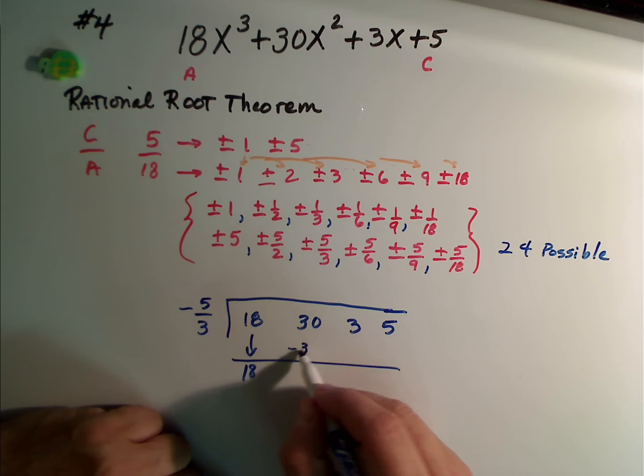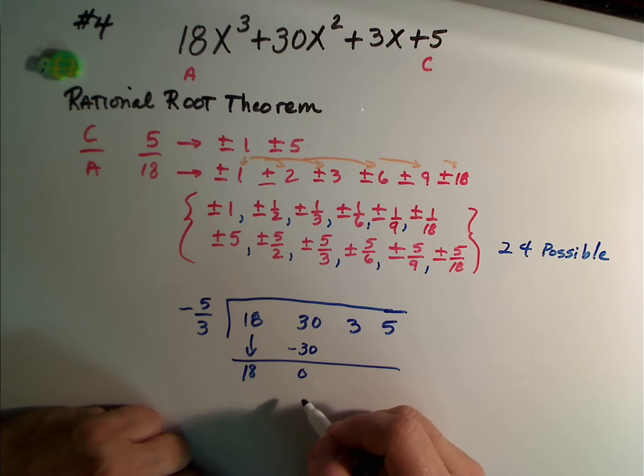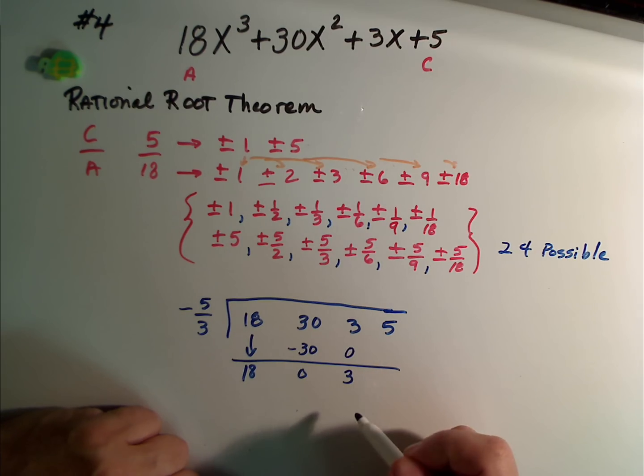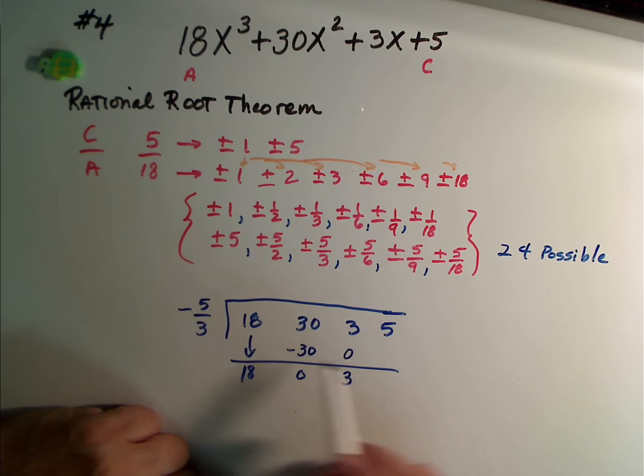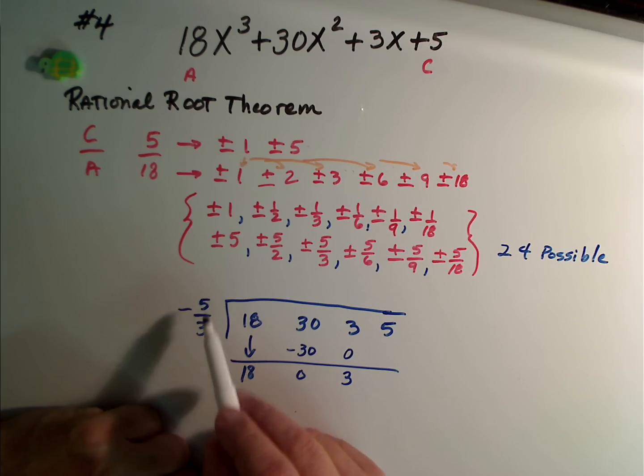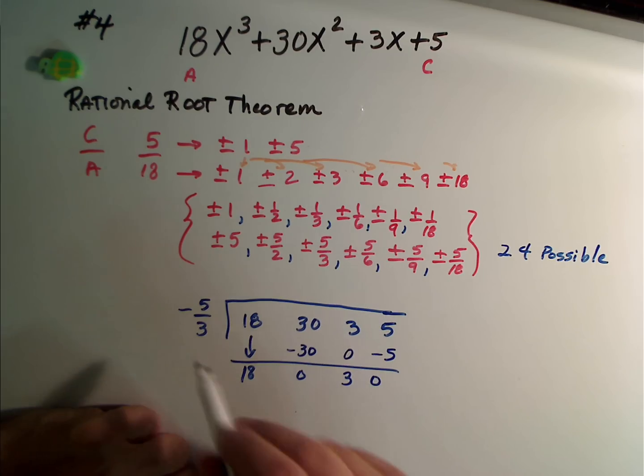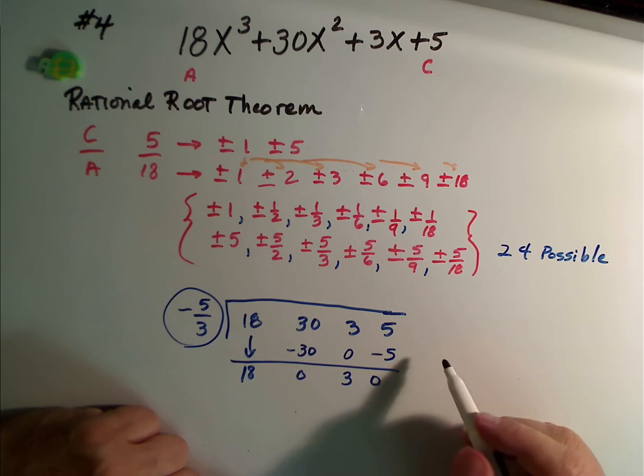Looks promising so far. Don't know yet. 0 times negative 5/3 is 0. 3 plus 0 is 3. I think we've got it. I can see it coming. 3 times 5 is 15 divided by 3 is 5. And that would be negative 5. In fact, we have found one of our roots.